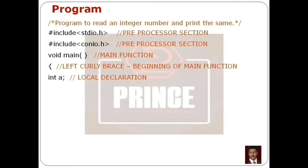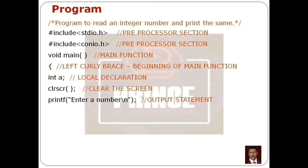In the Executable Part, first we use the clrscr function to clear the previous program output from the screen. Then the next executable statement: to prompt the user for input, we use a printf statement. The printf includes double quotes with the message text. The \n escape sequence moves the cursor to the next line.